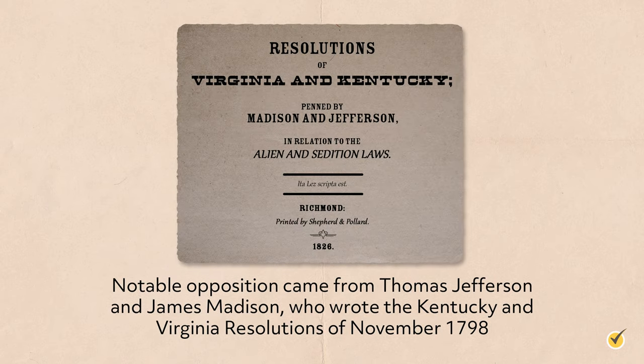The most notable opposition came from the Kentucky and Virginia Resolutions of November 1798, drawn up by Jefferson and James Madison. They described the Sedition Act as unconstitutional and an affront to liberty. The resolutions were both a challenge to the authority of a centralized government, still a novel concept in the 18th century, and an affirmation of states' rights. Generally seen as going too far, the resolutions failed to repeal the acts but laid the foundations for further debate about states' rights.